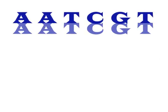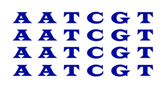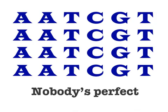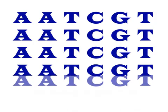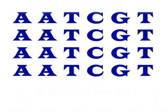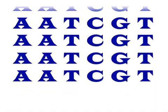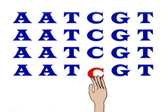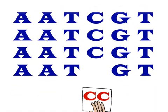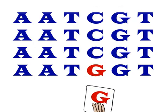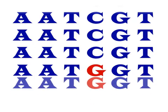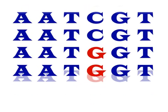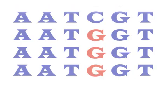When the body makes new cells, it doesn't make many mistakes. But nobody's perfect. Sometimes, when the genome is copied to make a new cell, a single base pair gets left out, added, or substituted. Single base pair substitutions create SNPs.